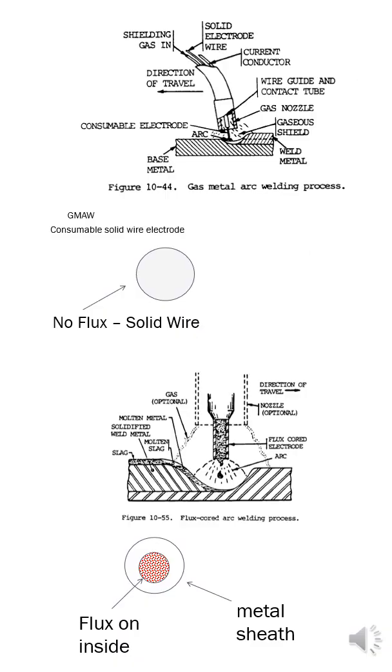The major difference is that FCAW utilizes an electrode very different from the solid electrode used in GMAW. In fact, it is closer to the electrodes used in shielded metal arc welding, or SMAW, also known as stick welding, except the flux is on the inside of a flexible electrode instead of on the outside of a very stiff electrode.